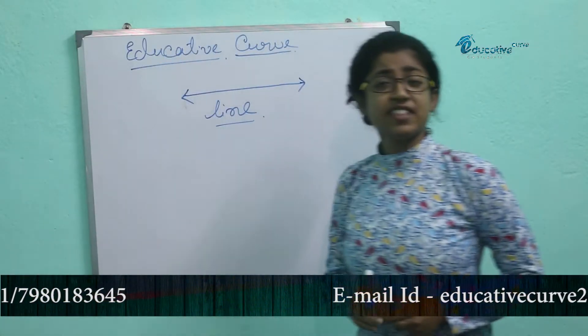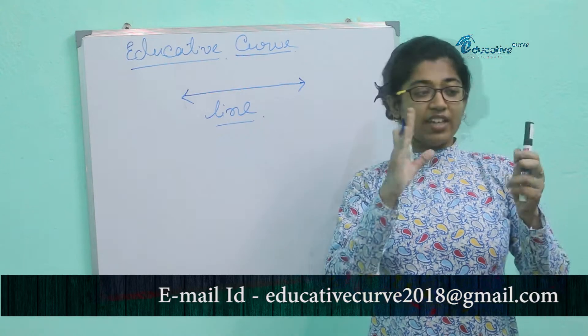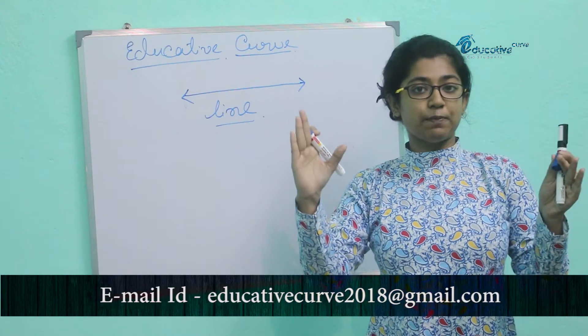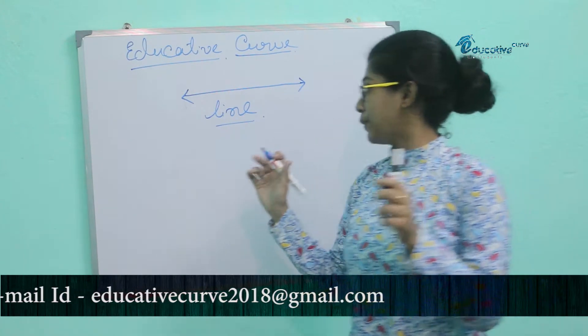Line segment. A line segment is the part of a line. It has two endpoints. That is called a line segment.